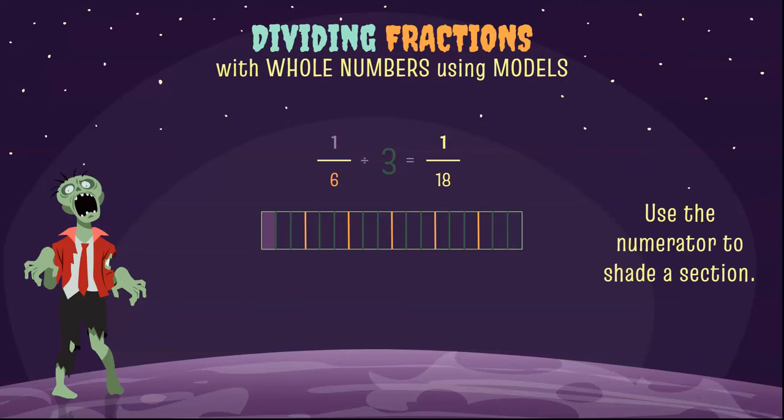Well, one piece out of how many? Well you'd have to count this up. There's 18 total pieces, total sections, and one is shaded. Therefore our answer is one-eighteenth.